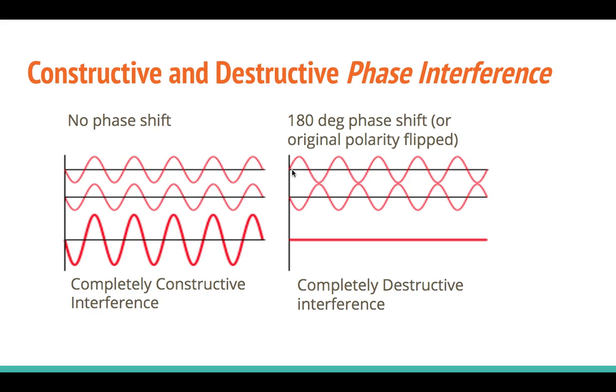In this case, because every point going positive producing a pressure level greater than the ambient air pressure is exactly the same magnitude, but the opposite sign of this waveform, they interact destructively. And the result of this type of phase shift or a polarity shift is that we can get complete destructive interference.